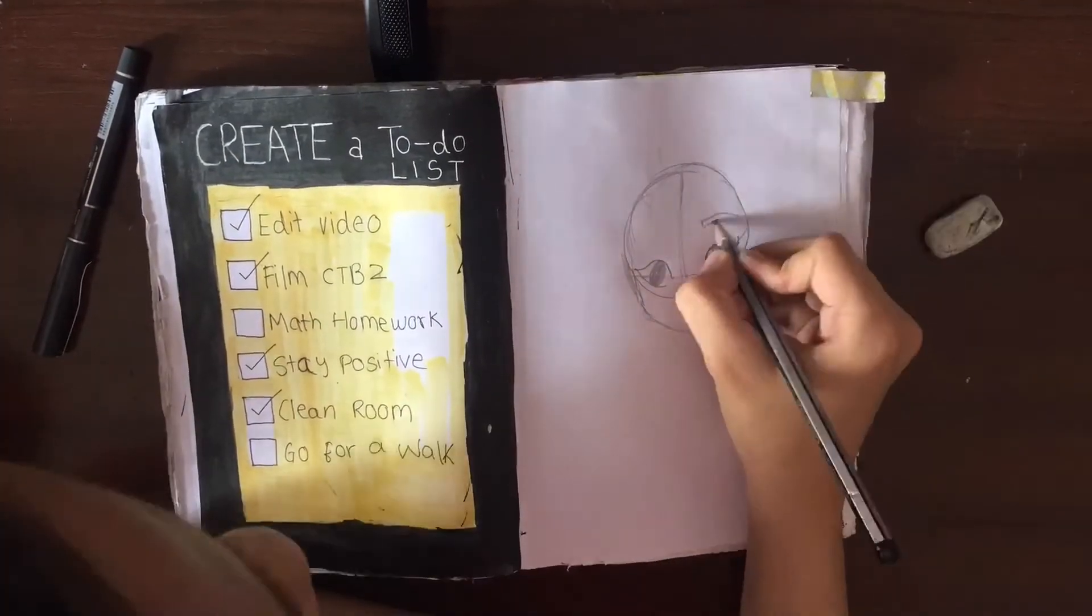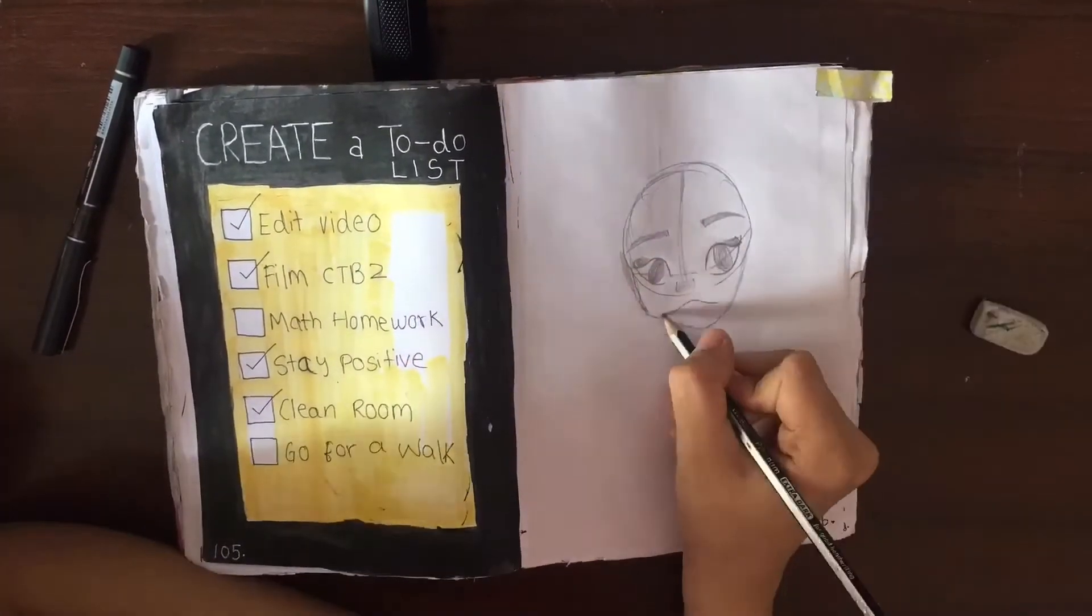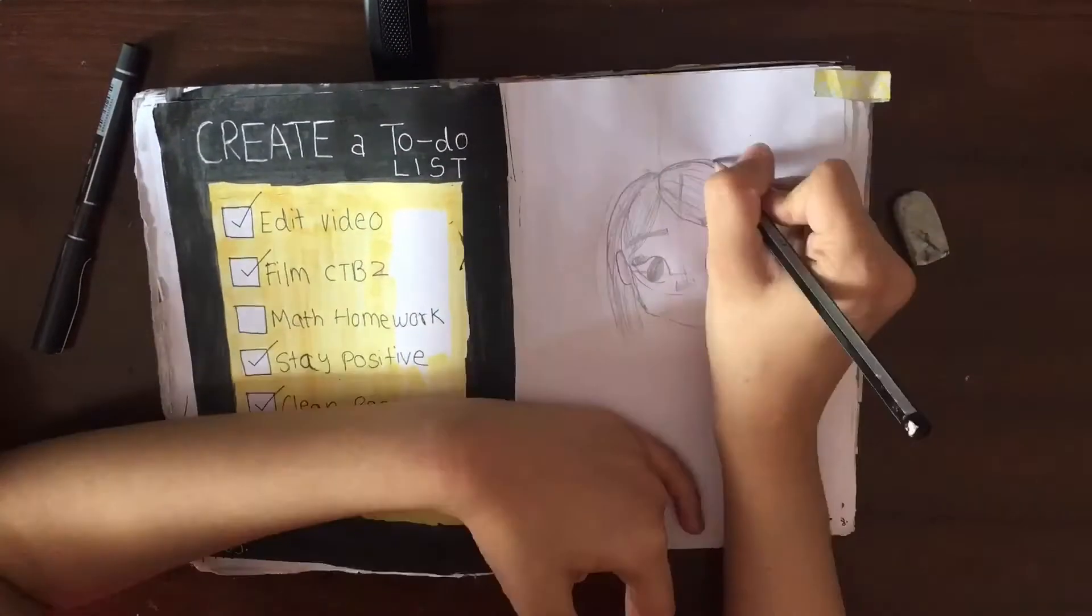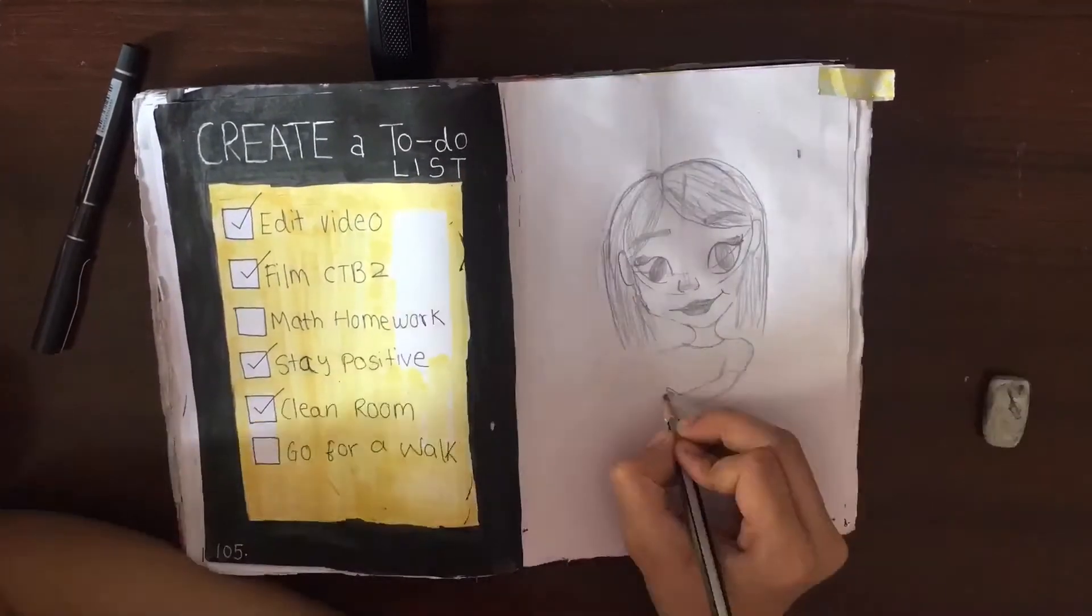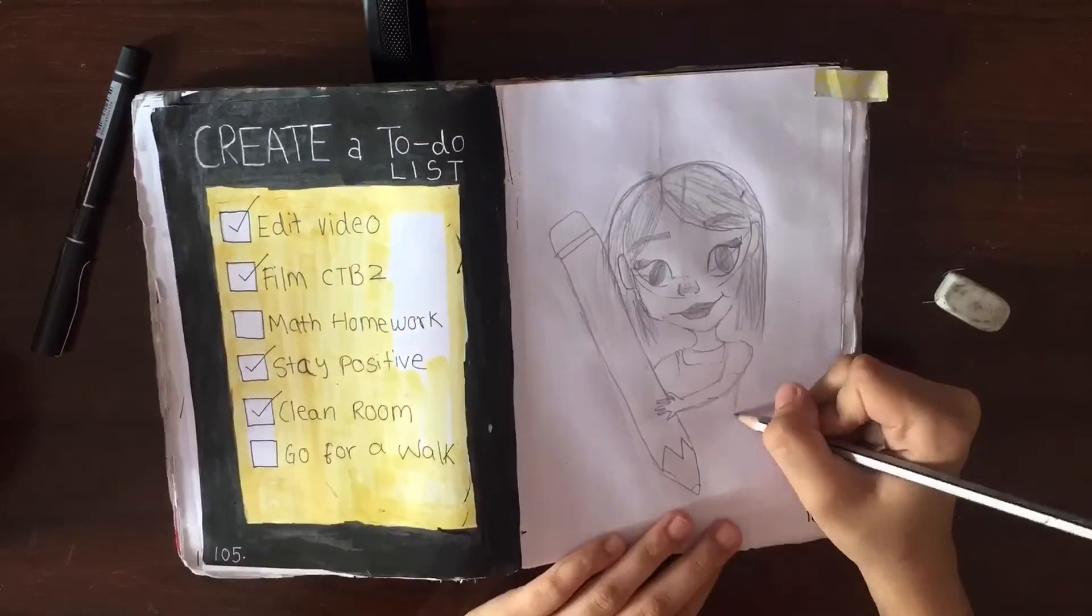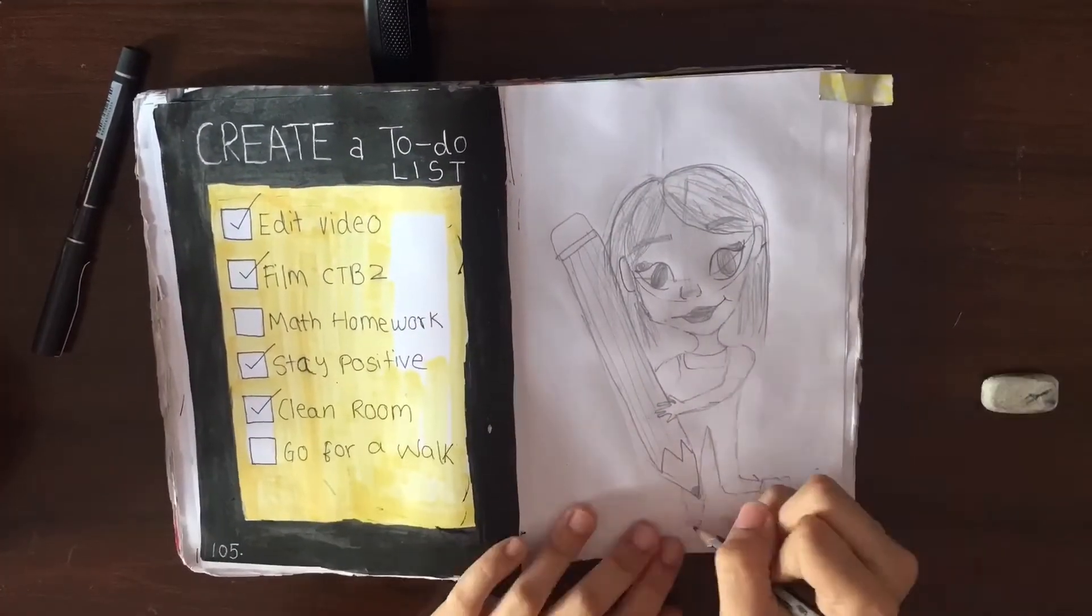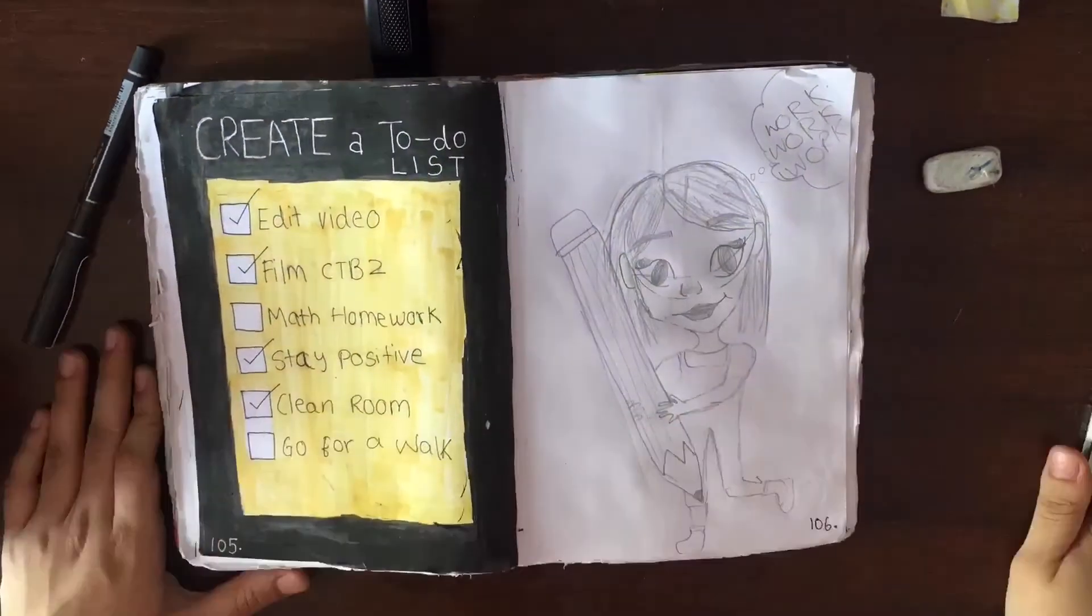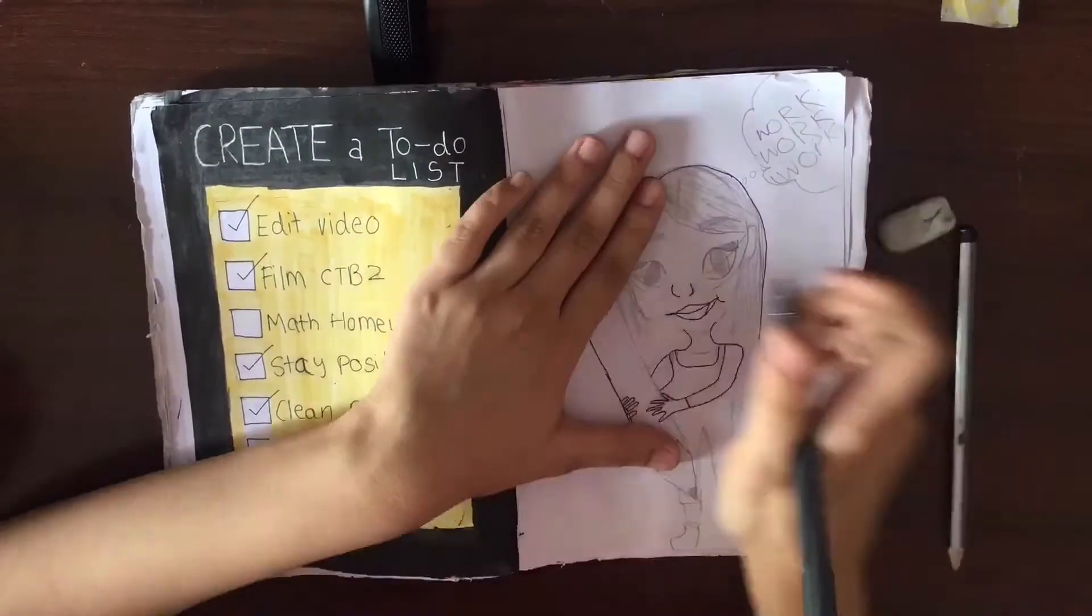Okay, then on the other page I decided to draw a sketch of a girl and that was me, I think. Anyway, so I drew this sketch of a girl and she was basically holding this gigantic pencil which she used to write down the to-do list. Basically this is her to-do list and she wrote it down with this gigantic pencil. I also in the corner wrote down 'work work work.' Then I just gave it an outline.